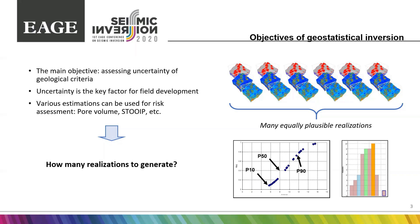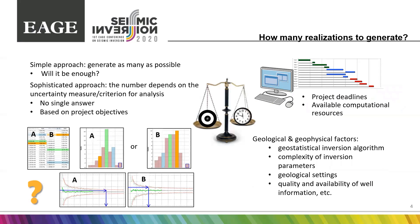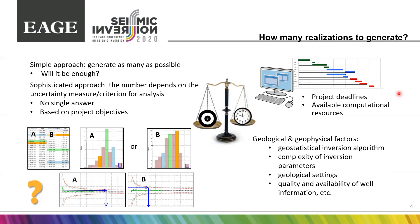One of the first questions while planning any statistical inversion is how many realizations need to be generated in order to reliably evaluate geological uncertainties. The first answer coming to mind is quite simple: just generate as many as possible. But since we cannot generate an infinite number of realizations due to project deadlines and available computational resources, the second question is raised immediately: will it be enough to evaluate geological uncertainties?